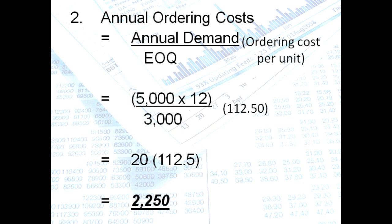Divided by 3,000, you will get 20 orders multiplied by 112.5, which is your ordering cost per unit. So our answer is 2,250. It is same as your carrying cost. So it does mean that we are at the optimal level.